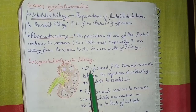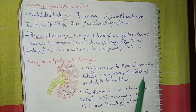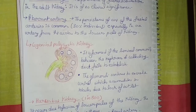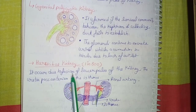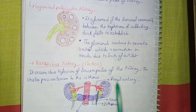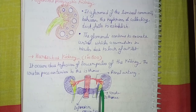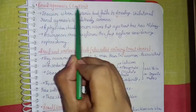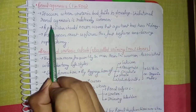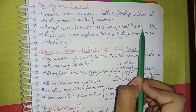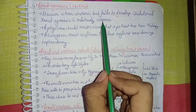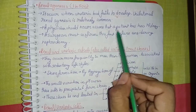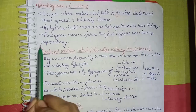Horseshoe kidney: found in 1 in 800 individuals. It occurs due to the fusion of the lower poles of the two kidneys. The ureters pass anterior to the isthmus, as shown in the diagram. Renal agenesis: found in 1 in 500 individuals. It occurs when the ureteric bud fails to develop. Unilateral renal agenesis is relatively common. A physician should never assume that a patient has two kidneys — a surgeon must confirm this fact before considering nephrectomy.